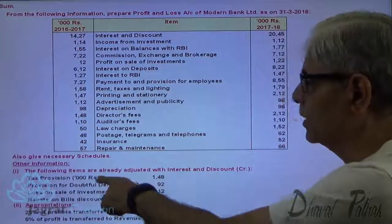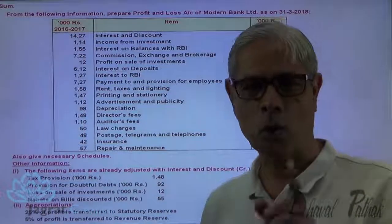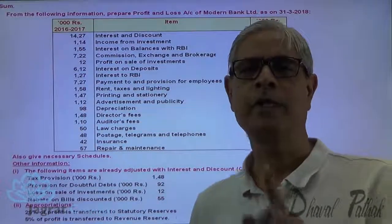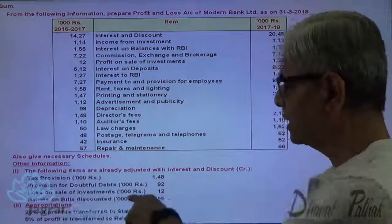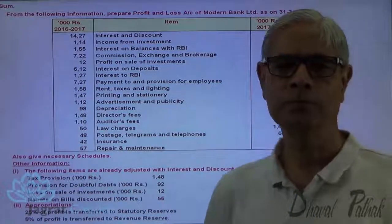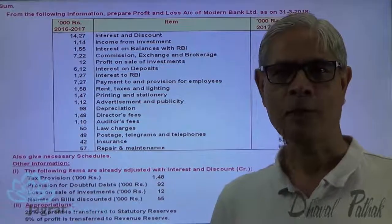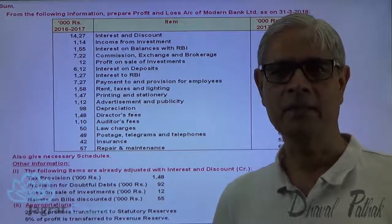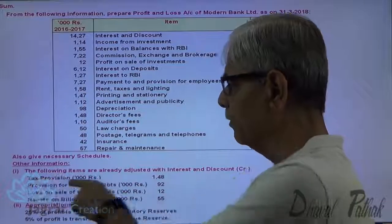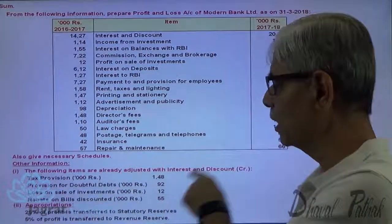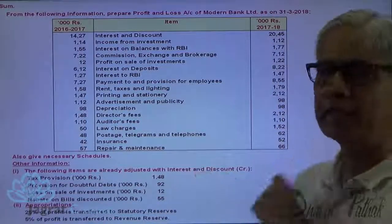The following items are already adjusted with interest and discount. So rebate on bills discount — that is required to be adjusted against interest and discount — is already adjusted and we need not consider it separately. However, these three items — tax provision, provision for doubtful debts, and loss on sale of investment — have been adjusted against interest and discount, but they should not be.